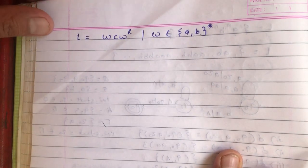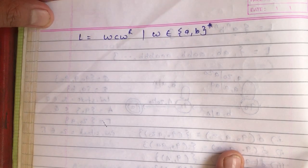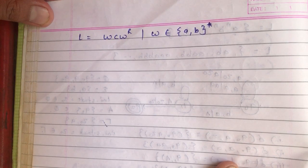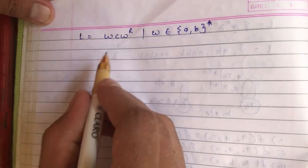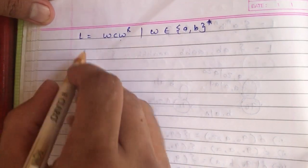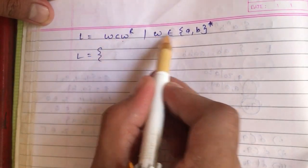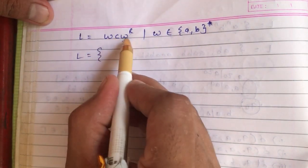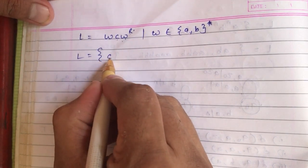Let us discuss a new problem: the language w c w-reverse, where w belongs to {a, b}*. So w is basically a string from all combinations of a's and b's, followed by a symbol c, and then the reverse of w. When w is null, w-reverse is also null, so the first string generated in this language will be only c.